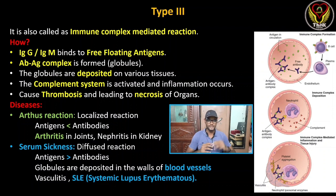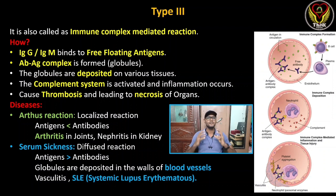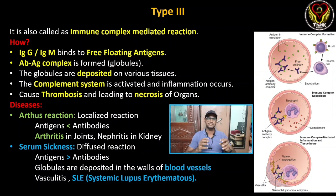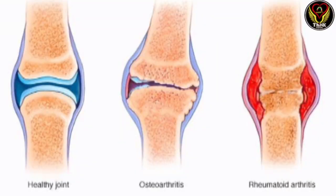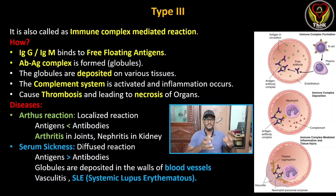That leads to necrosis. So this is the Type 3 hypersensitivity reaction. If you look at diseases, you can see it in two ways. You can see it as the Arthus reaction — a localized reaction affecting the kidneys (nephritis) and joints (arthritis).